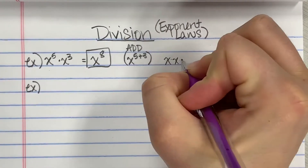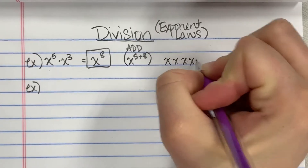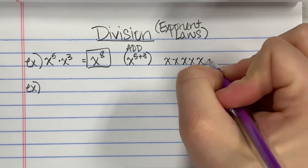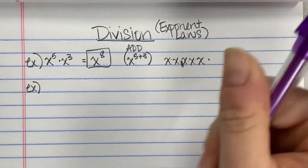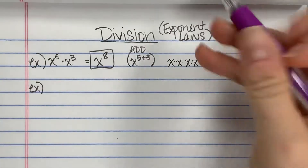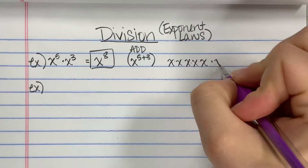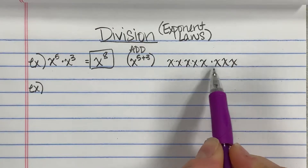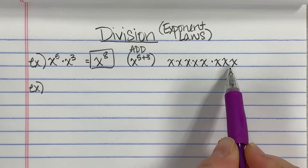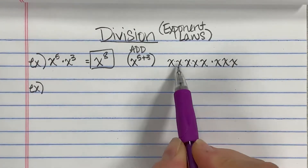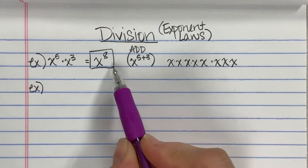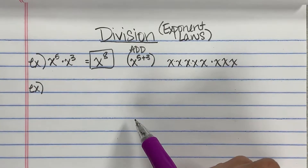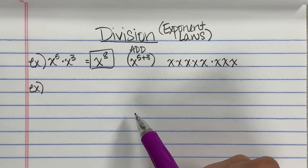If we go out to the expanded form, what's actually happening is I have five x's being multiplied together, being multiplied by three more x's being multiplied together. So really when you look at that, you've got eight x's all multiplied together. So that's definitely what's happening there.